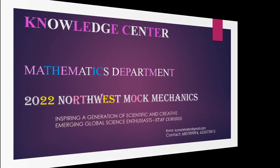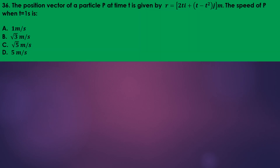Our first question says the position vector of a particle P at time t is given, and we need the speed of P when t equals one second. To get velocity you differentiate the position vector with respect to time. Differentiating gives 2i for the i-component, and differentiating the j-component gives one minus 2t for j.